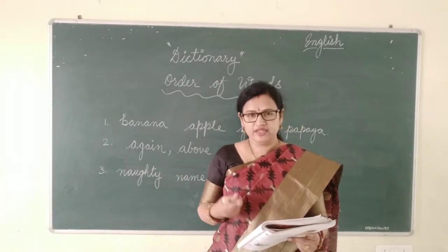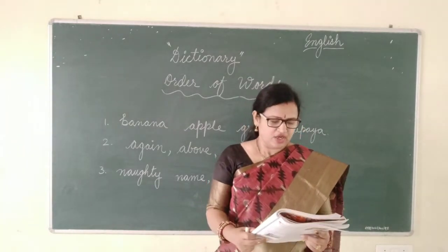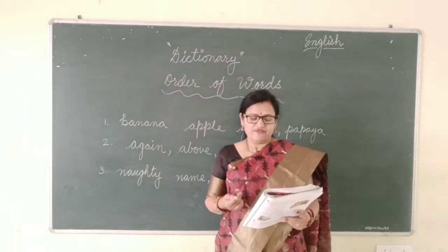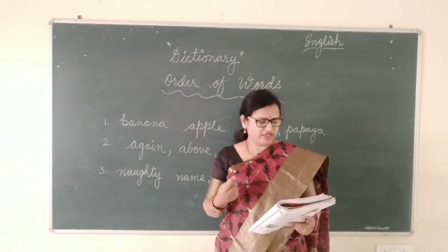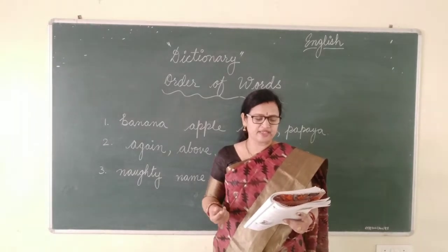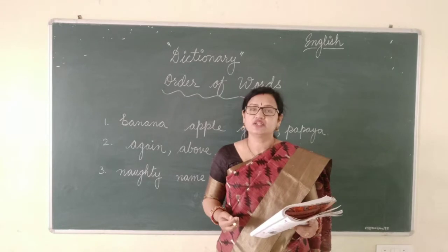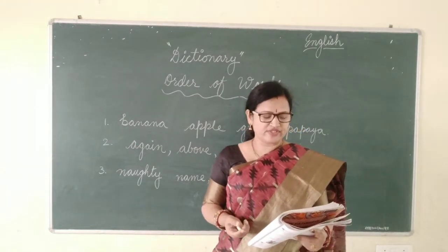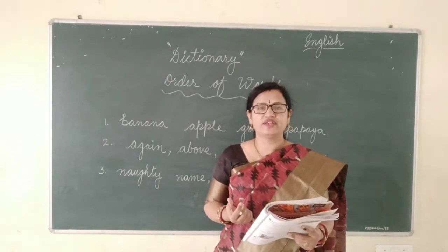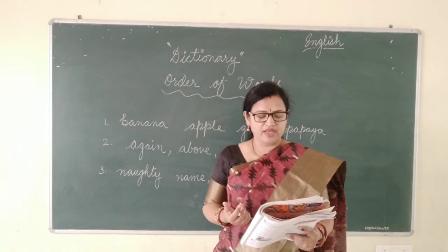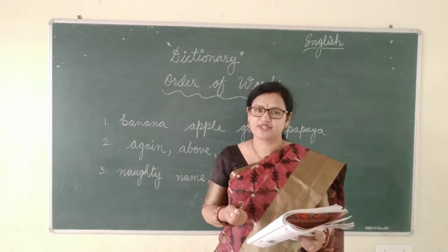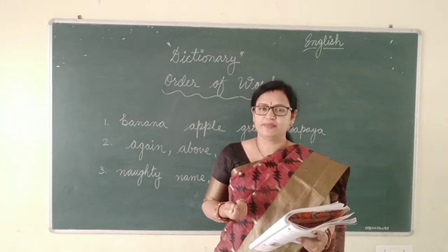And accordingly, the words are also arranged in the dictionary. If the word has the same first and second letter also, then what will we do? We must look at the third letter. For example, they have given: brave, bread, bright, daybreak, daycare, and dream. In these words, the first and second letters are the same — BR, BR, BR — for brave, bread, and bright. But the third letter is different, and it is arranged in alphabetical order.